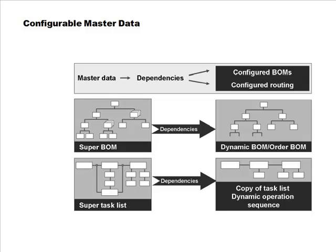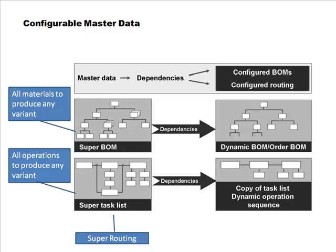Correspondingly, based on the features selected, you generate a routing or task list - a dynamic operation sequence for the chosen characteristics. So you've got the master data, you apply the various dependencies - for example, you want 15 meters lift or an electric pump - and once you select those dependencies, you get configured BOMs and configured routings. We're studying this in this chapter because SAP internally uses the classification system to achieve all of this.